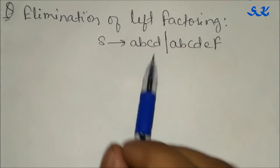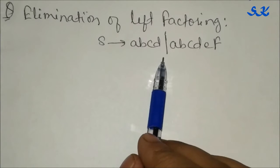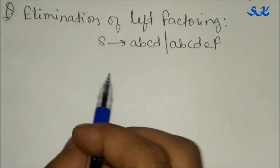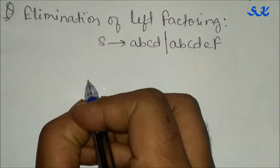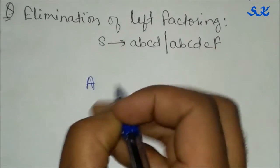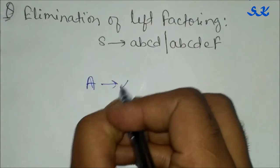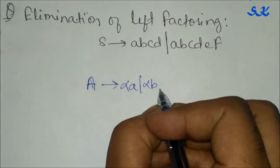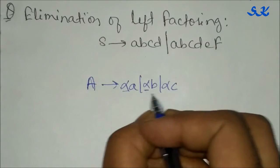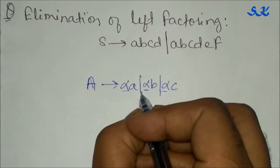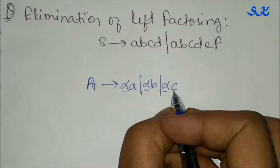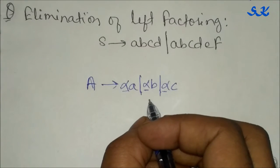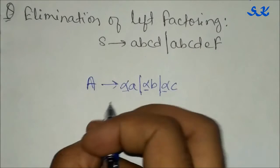We are going to remove the left factoring from this grammar. Before removing, we see the general expression which is A → αa | αb | αc, where alpha is a non-terminal and a, b, c are strings of grammar symbols. To remove left factoring, we write this statement as A → αA' and A' → a | b | c.